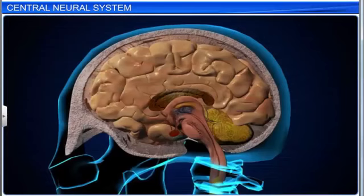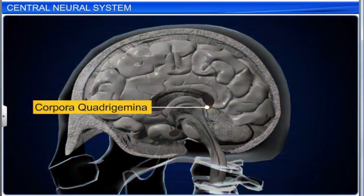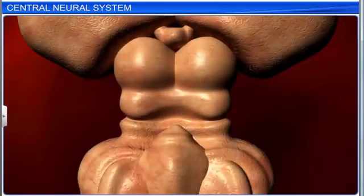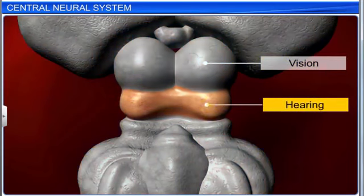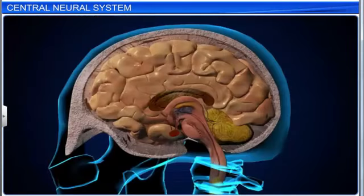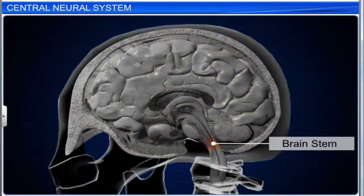The dorsal portion of the midbrain consists of four lobes called the corpora quadrigemina. It contains reflex centers for vision and hearing. The midbrain and hindbrain form the brain stem. It acts as a relay station for auditory and visual information — every impulse conducted between brain and spinal cord passes through the brain stem.